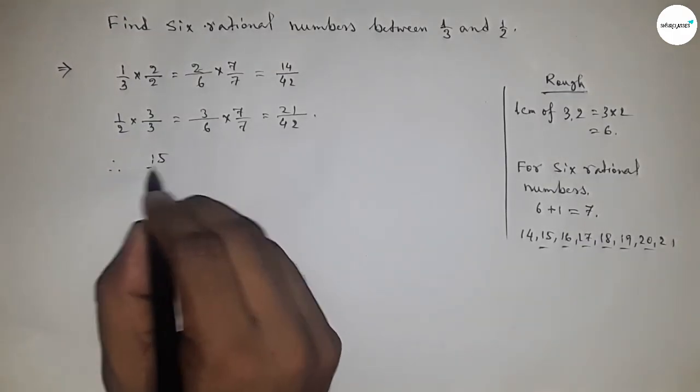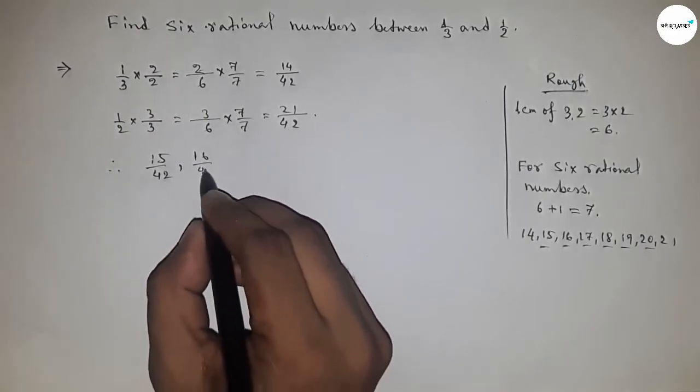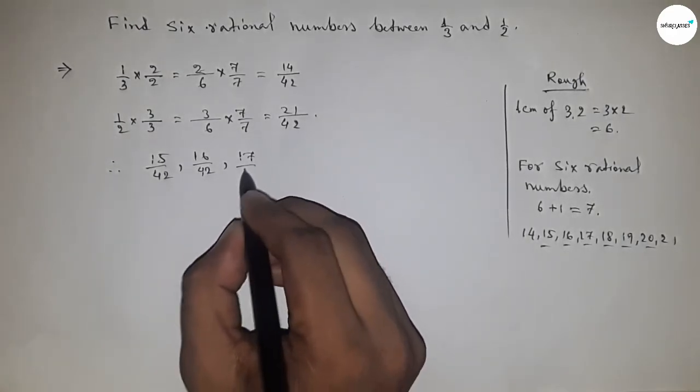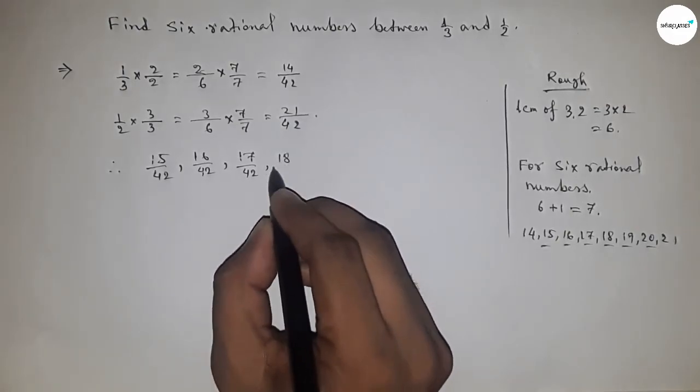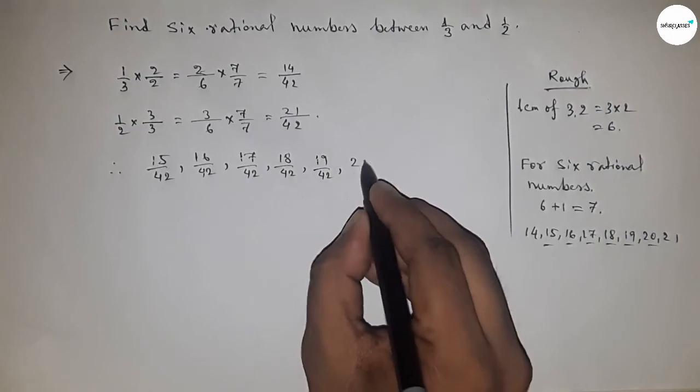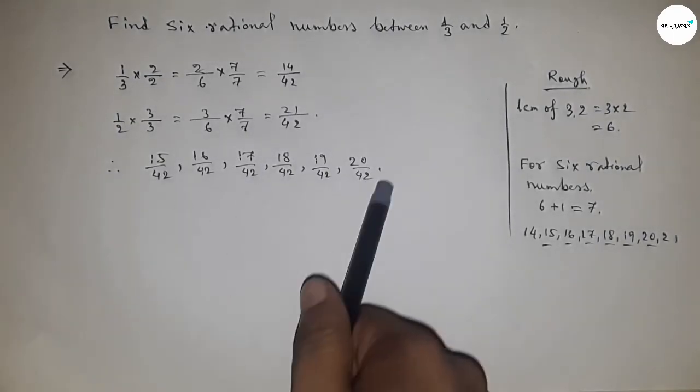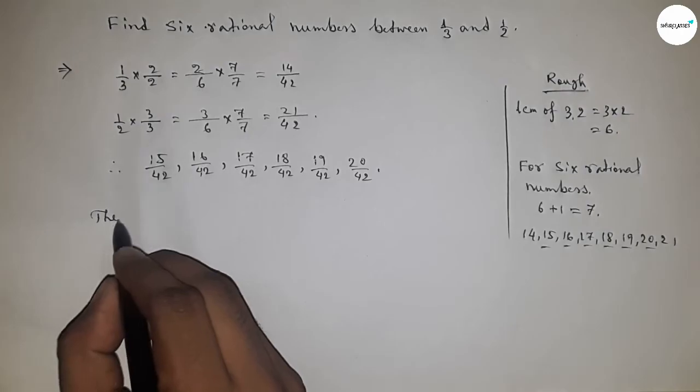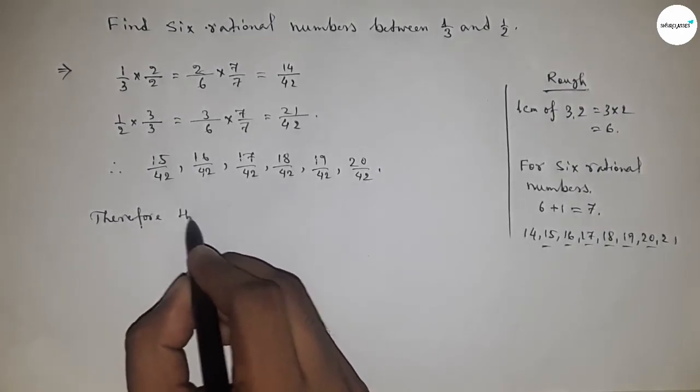The 6 rational numbers are 15/42, 16/42, 17/42, 18/42, 19/42, and 20/42. These are the 6 rational numbers between 1/3 and 1/2.